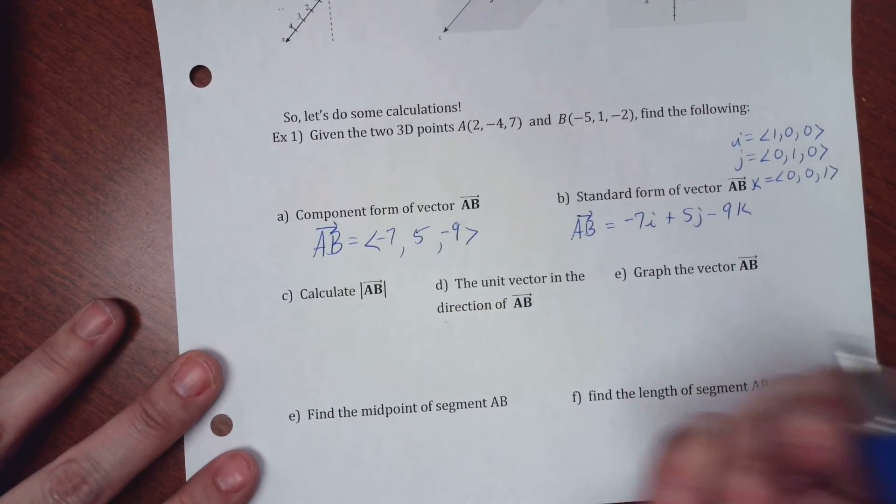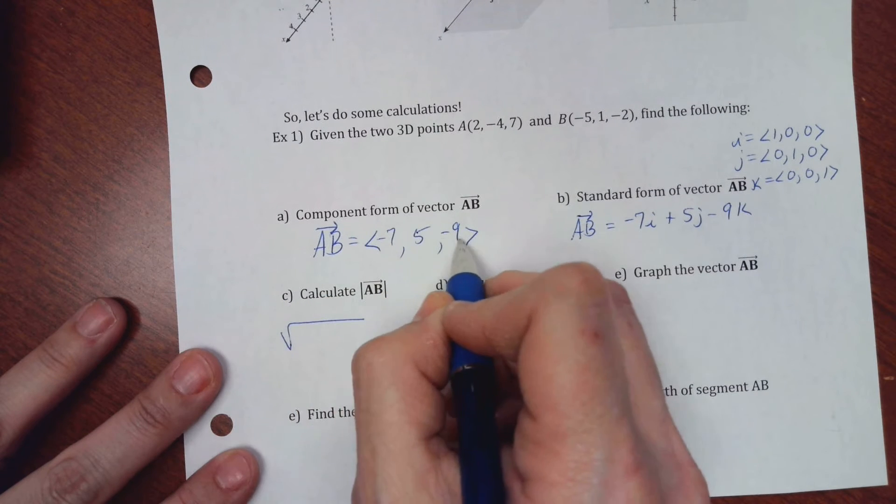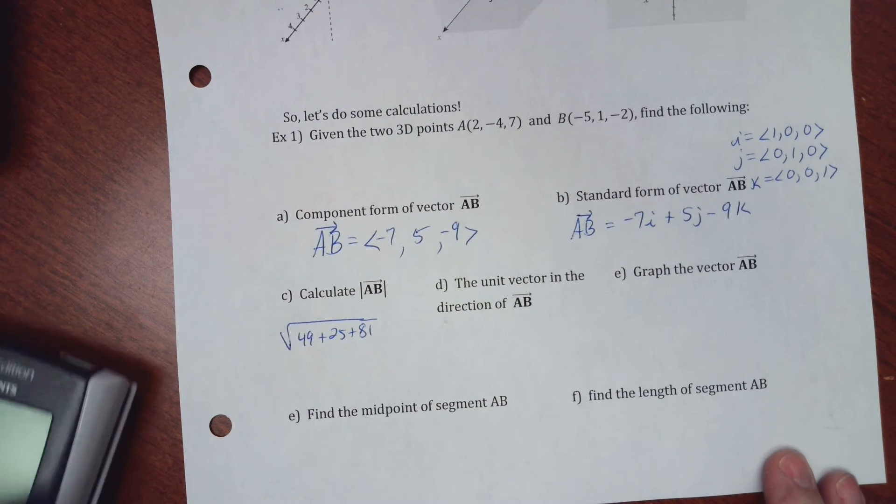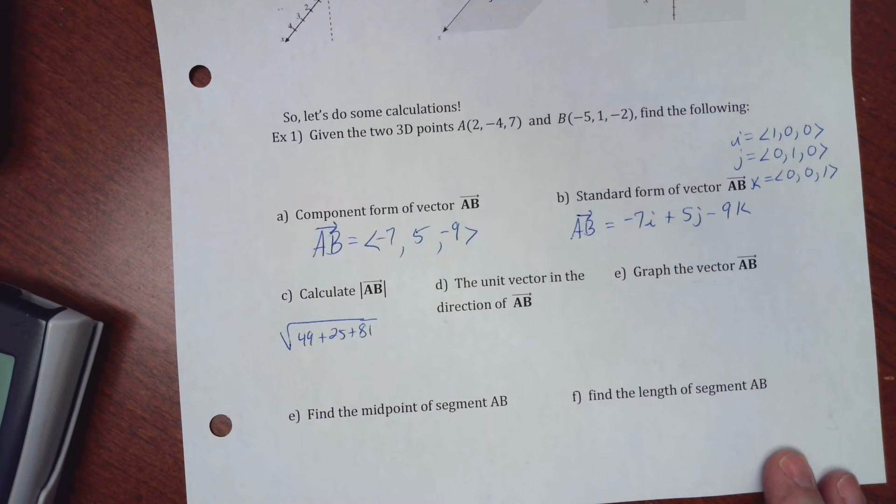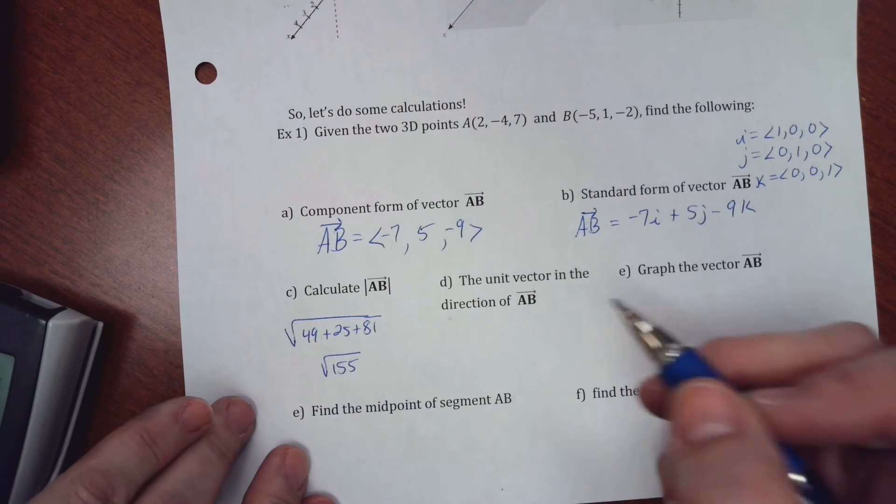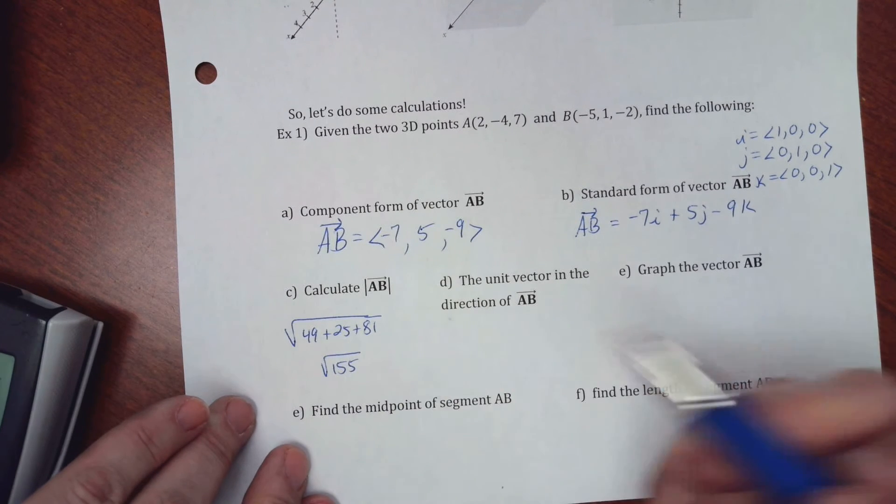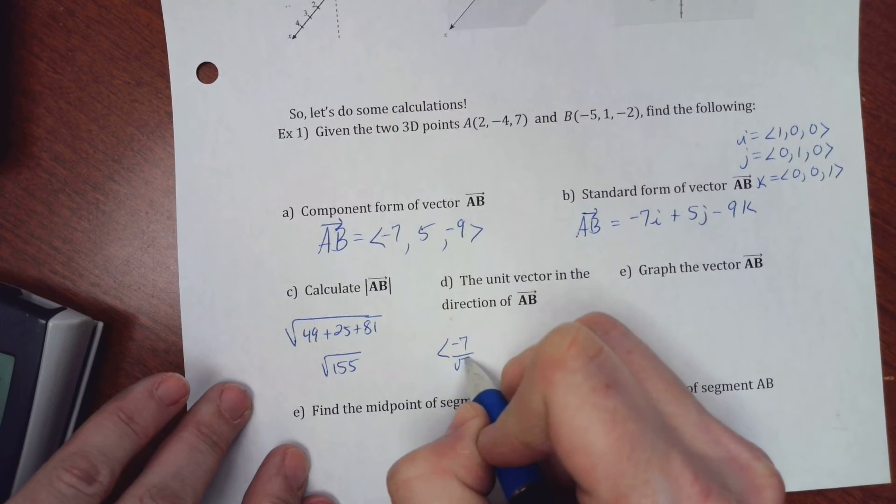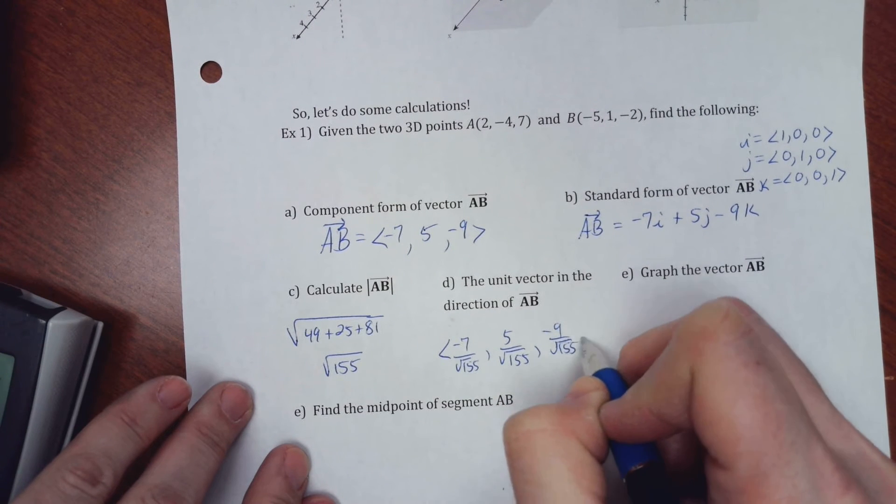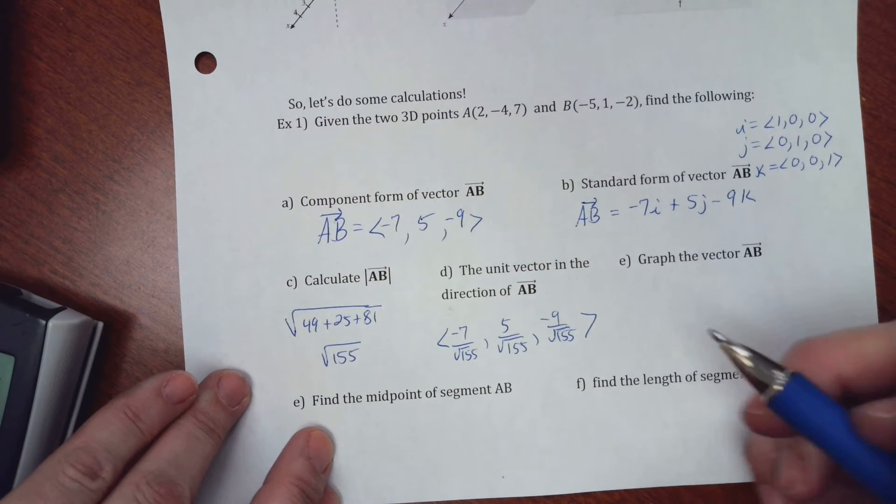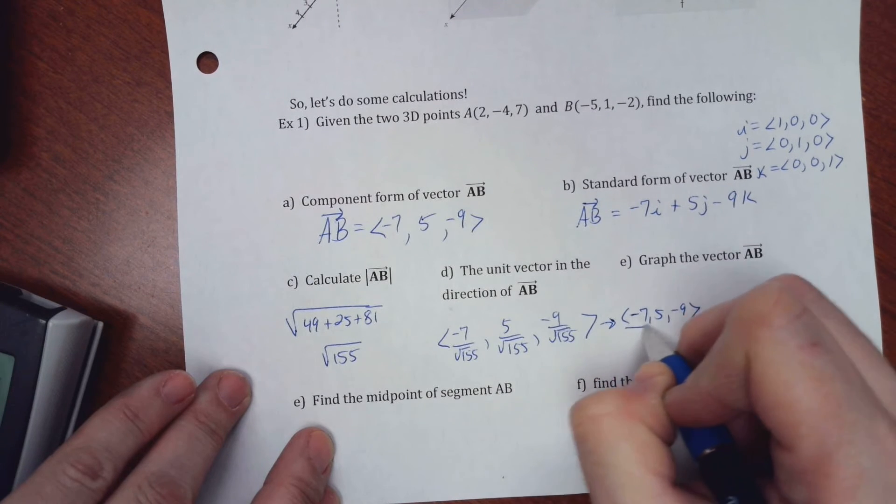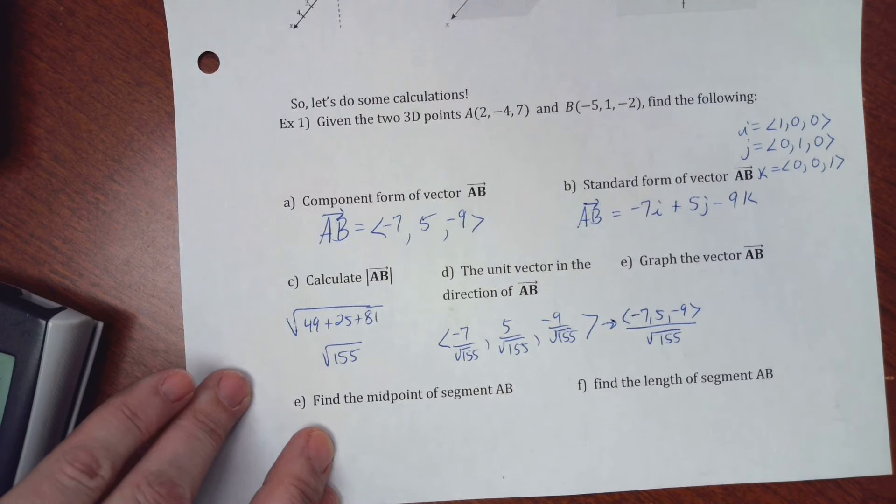Alright. So calculate the magnitude. So if I want the magnitude, I just do the square root, and I square all these parts. So 49 plus 25 plus 81. So whatever that is, let me see. So 155. So it just makes your work a little bit more. Find a unit vector in the direction of AB. So basically, I take my original vector and divide it by the magnitude, same as I did before. So, negative 7 over radical 155, 5 over radical 155, and negative 9 over radical 155. And sometimes you can make that a little bit shorter. You can put negative 7, 5, and negative 9, and you can just put it over square root of 155 like that.